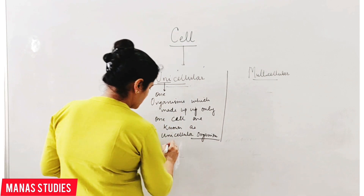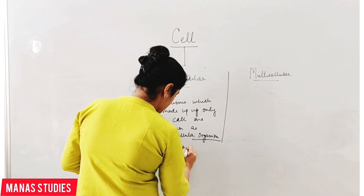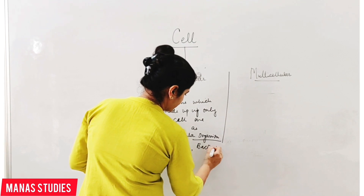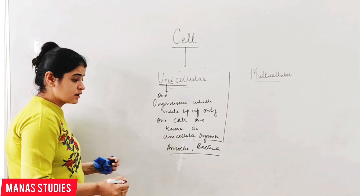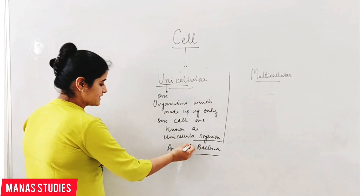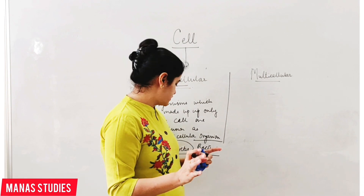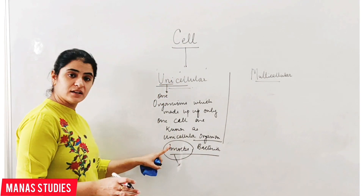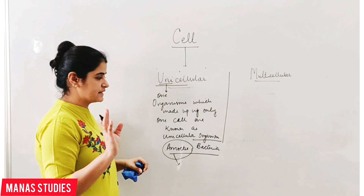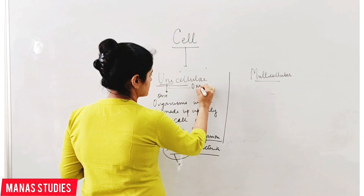For example, amoeba and bacteria. In these organisms, all the functions are performed by only a single cell. No organ is present, no tissue is present. All the functions in amoeba and bacteria are performed by a single cell, so they are known as unicellular organisms.